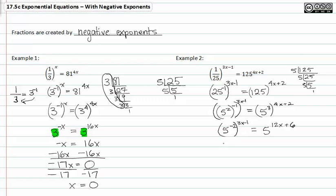Now I'm going to multiply the negative 2 through. 5 to the negative 6x plus 2 is equal to 5 to the 12x plus 6. Now that my bases match, I'm going to drop my bases out and set my exponents equal to each other.